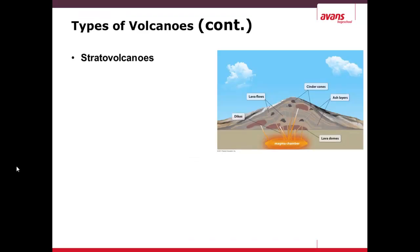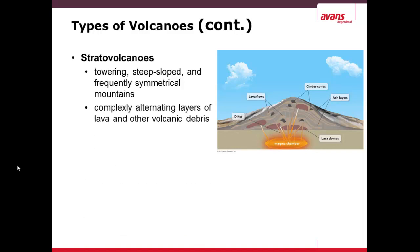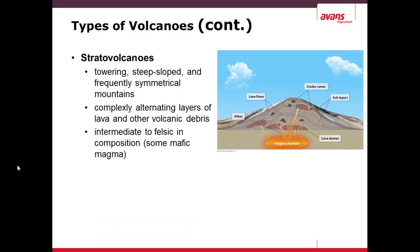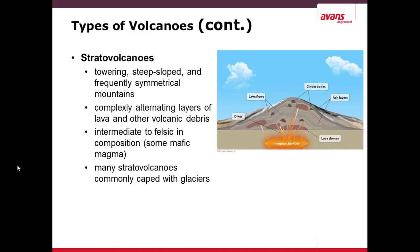Stratovolcanoes — here is a picture of a stratovolcano on the right. They are towering with more classical steep slopes, as opposed to shield volcanoes which are not steep. Stratovolcanoes are steep-sloped and frequently very symmetrical. They have alternating layers of lava, so they can build up over long periods of time. They have intermediate to felsic composition. Many stratovolcanoes are capped by glaciers — permanent ice caps on top of the mountains — which, as we'll see later, can have their own hazard.